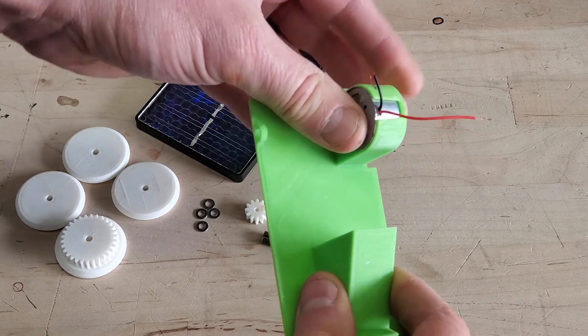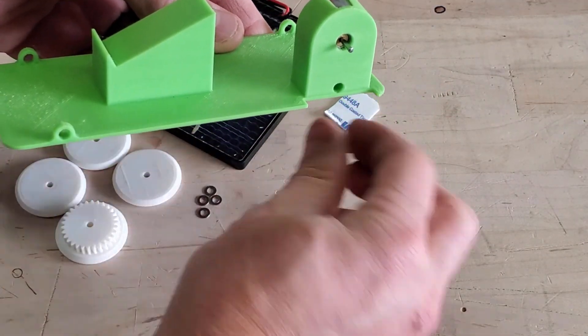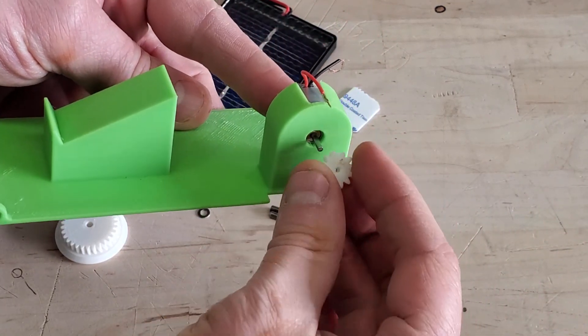Like so. Then take your small spur gear and slide it onto the motor shaft axle.